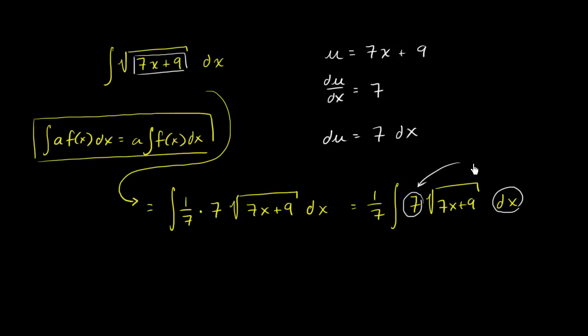So du is equal to 7 times dx. That part right over there is equal to du. And if we want to care about u, well, that's just going to be the 7x plus 9. That is our u. So let's rewrite this indefinite integral in terms of u. It's going to be equal to 1 seventh times the integral of the square root of u du. Du, 7 times dx is du.